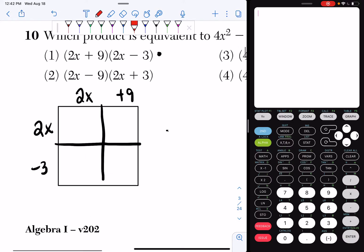I just multiply. So 2x times 2x is 4x squared. 2x times 9 is 18x. Negative 3 times 2x is negative 6x. And then negative 3 times 9 is negative 27.